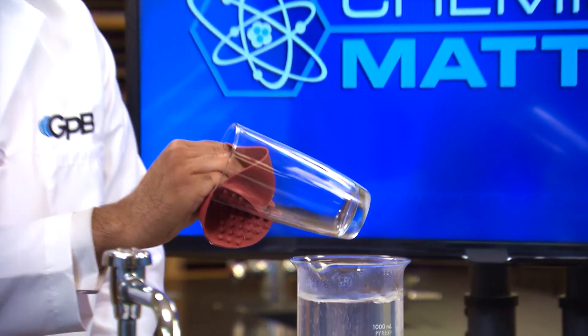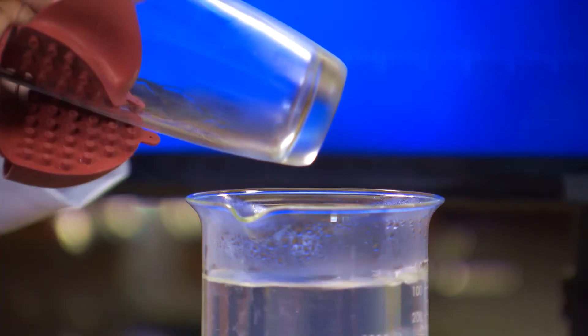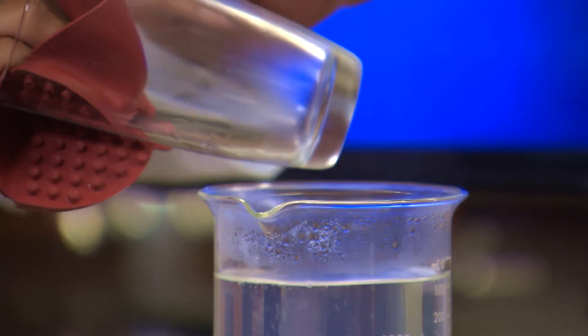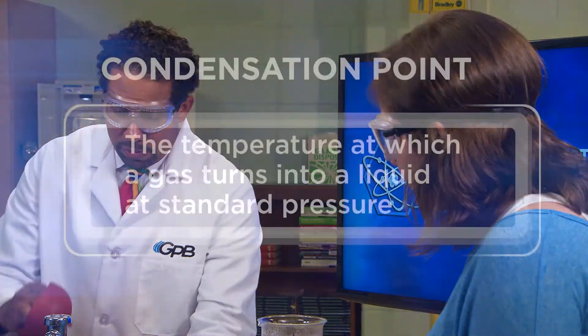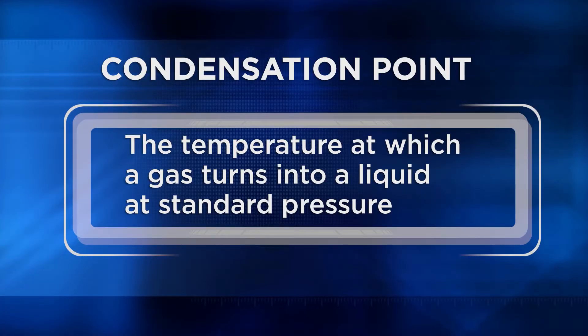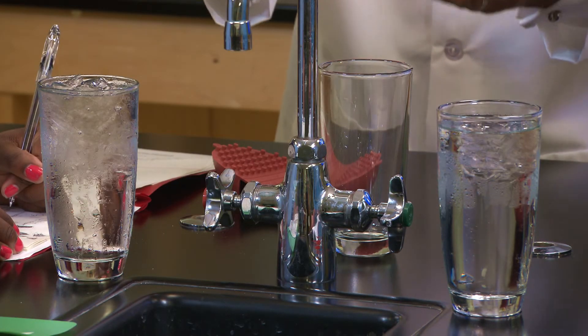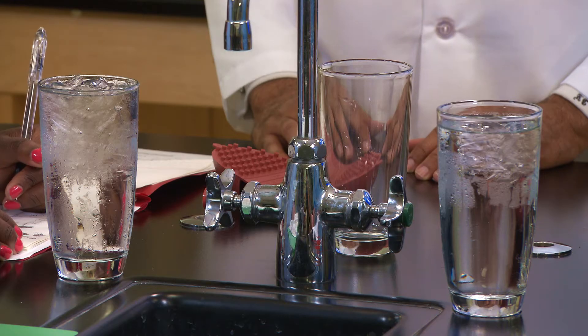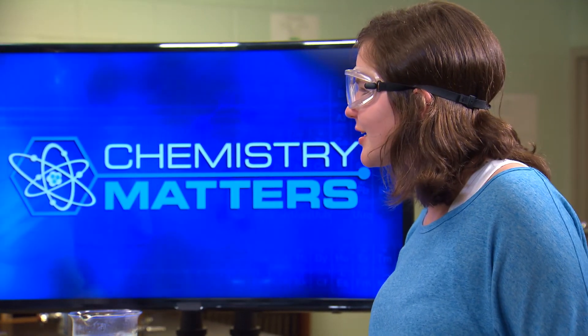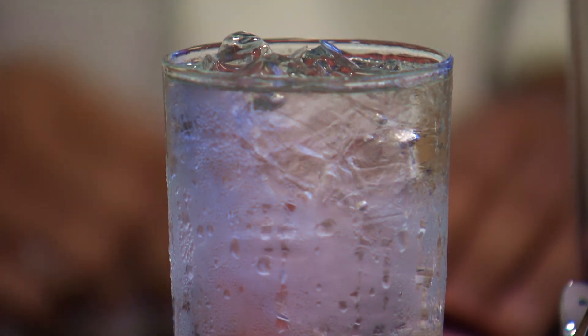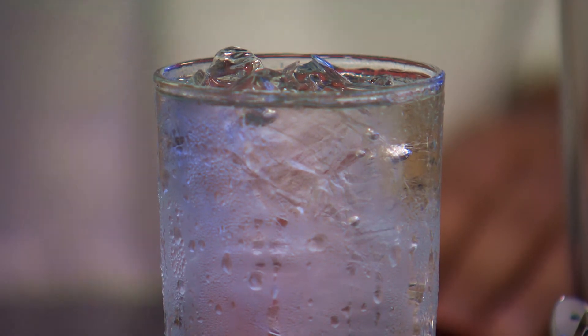If I take this glass and hold it over the beaker where the gas is rising, it will start to collect water. The water in the gaseous phase is actually condensing into liquid water droplets on the outside of the glass because it's cooling down. Condensation point is the temperature at which a gas turns into a liquid at standard pressure. You've also seen gaseous water from the air turn into liquid water when a glass starts to sweat — the water vapor in the room is sticking to the glass because it's cooling down on contact with the glass.